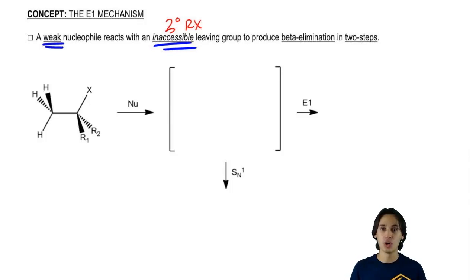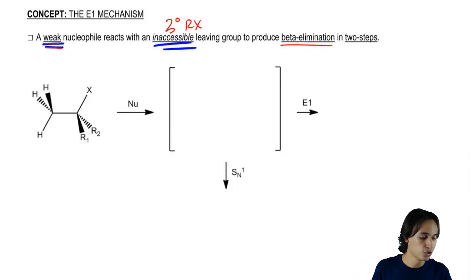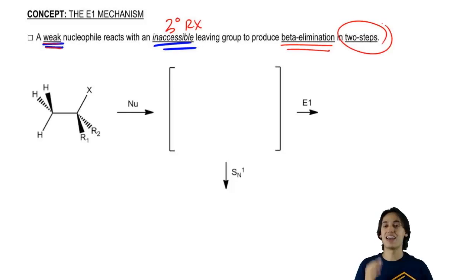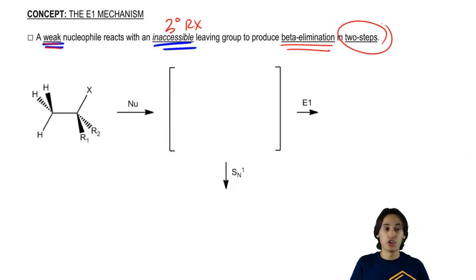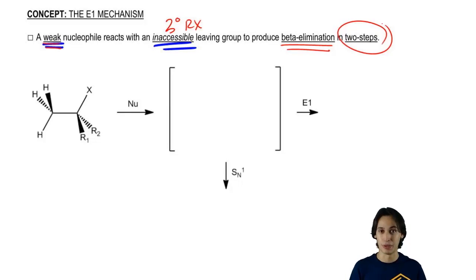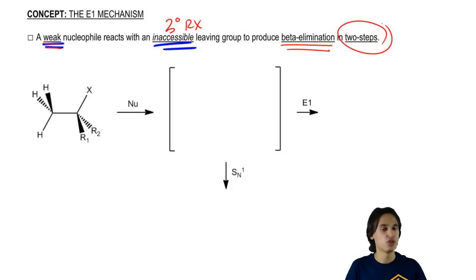It turns out we don't. These same exact conditions are going to produce beta elimination in two steps as well. What that means is that SN1 and E1 always compete with each other and they're almost impossible to separate. Every time you see an SN1 reaction, E1 is also occurring and you really can't do much to stop it.